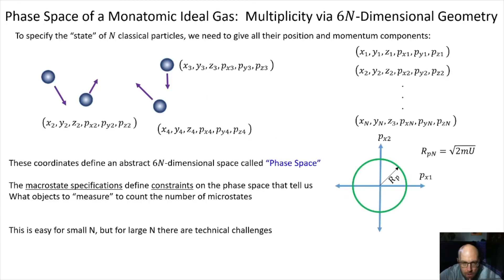So just to remind you of where we are and why, to specify the microstate of a monatomic ideal gas, we need to give the position and momentum components of every atom in the gas. And so that's a lot of numbers to have to specify all of these ordered six tuples of x, y, z, px, py, pz for every atom.